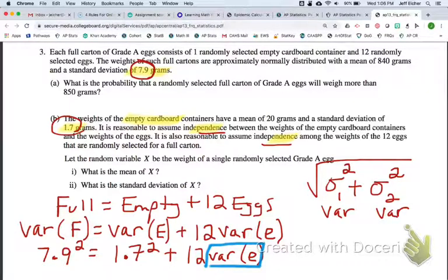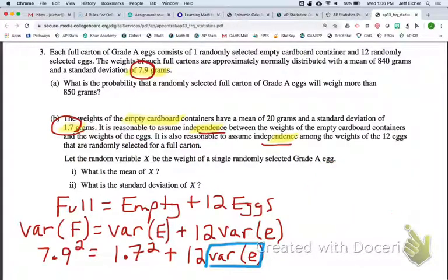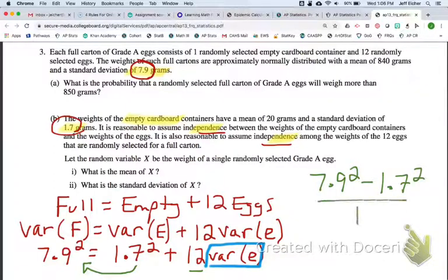So to do that, get a little more space over here. We would say, let's see, we'd subtract this to both sides, and we'd divide by 12, so it'd be 7.9 squared minus 1.7 squared, all over 12. And that is the variance of E, the variance of one egg.